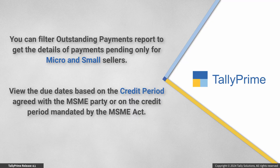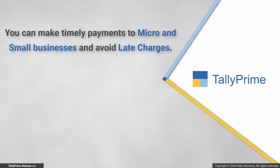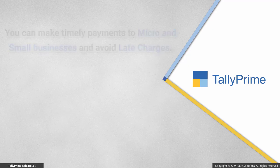You can filter the outstanding payments report to get the details of pending payments only for micro and small sellers. View the due dates based on the credit period agreed with the MSME party or on the credit period mandated by the MSME Act. Using these features, you can make timely payments to micro and small businesses and avoid late charges.